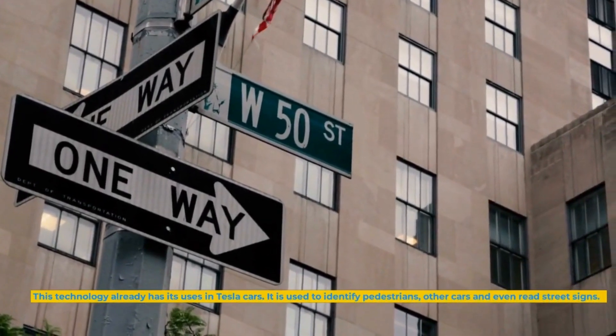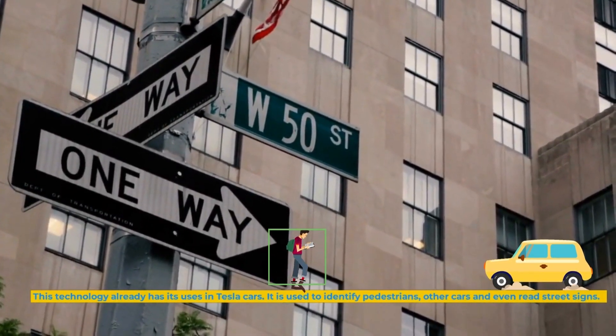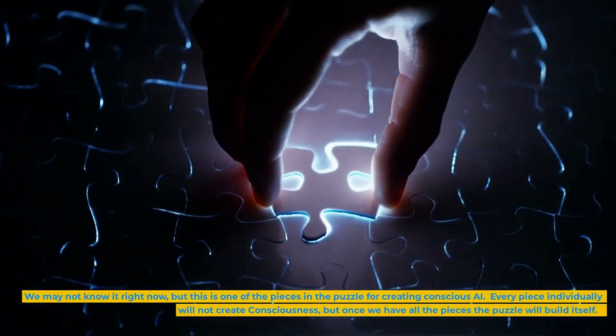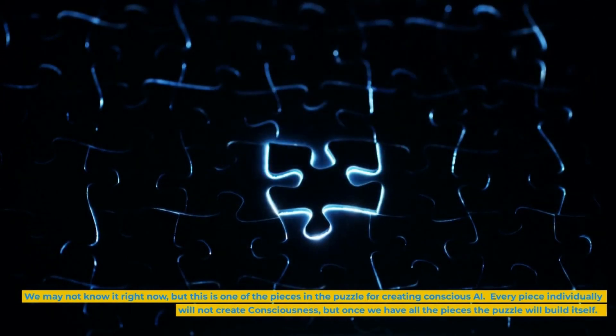This technology already has its uses in Tesla cars. It is used to identify pedestrians, other cars and even read street signs. We may not know it right now, but this is one of the pieces in the puzzle for creating conscious AI. Every piece individually will not create consciousness, but once we have all the pieces the puzzle will build itself.